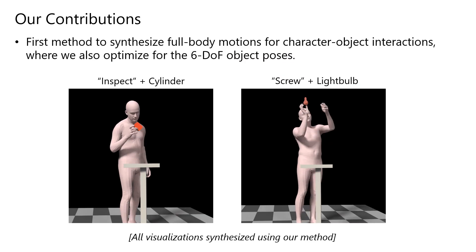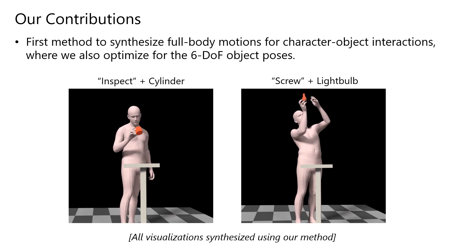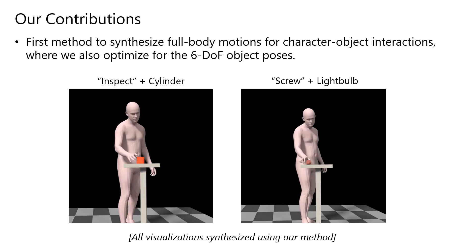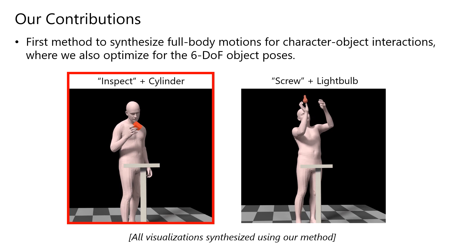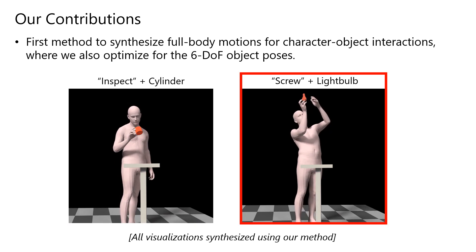To address this limitation, we propose the first method to synthesize full-body motion sequences for character-object interactions, and optimize for the 6-DOF object poses such that grasping constraints are satisfied. We can synthesize generic actions like inspecting, which can be performed with all objects, as well as actions like screwing, which are performed with specific objects like the light bulb.